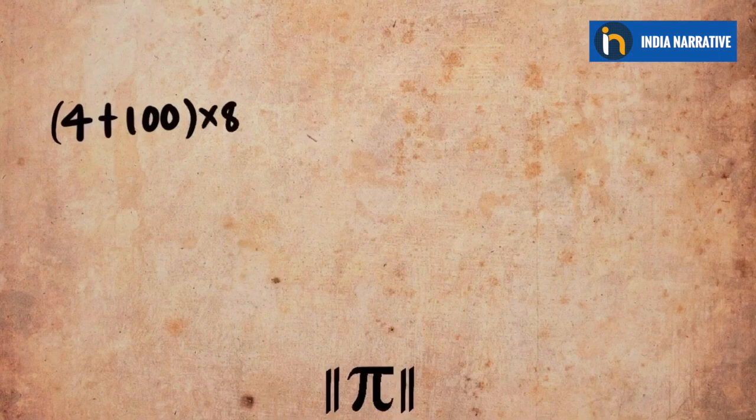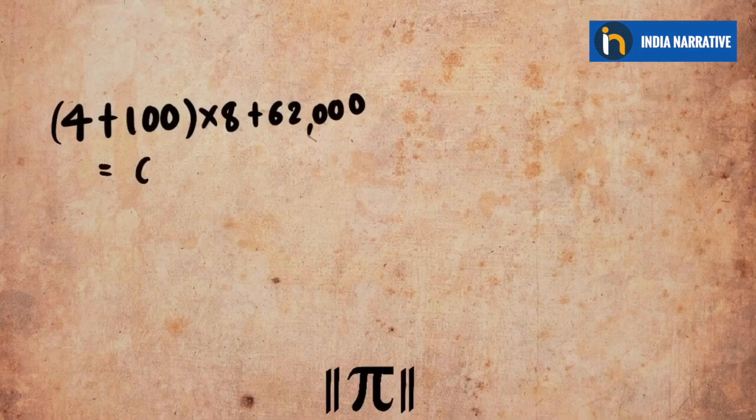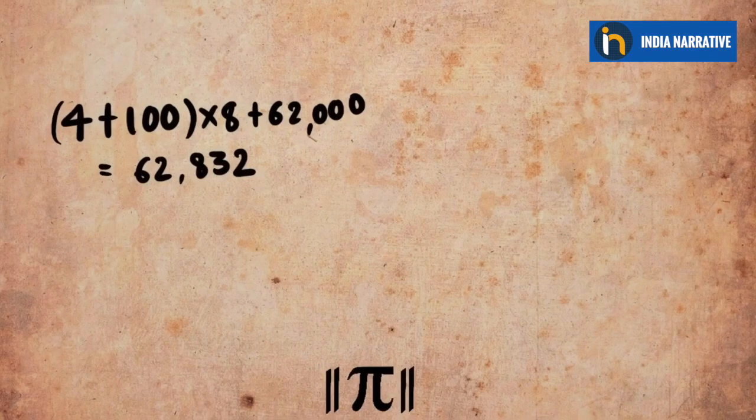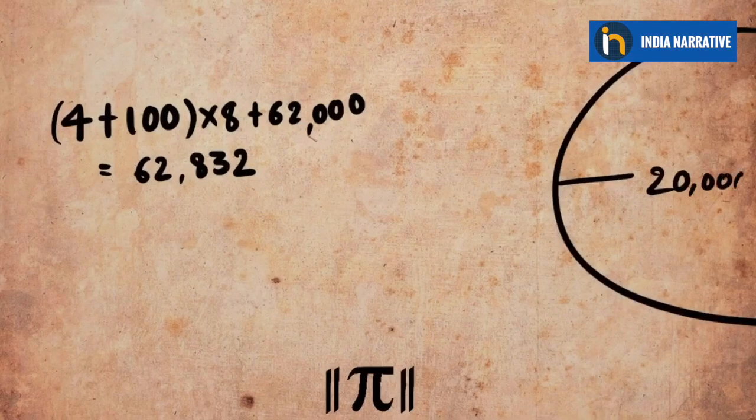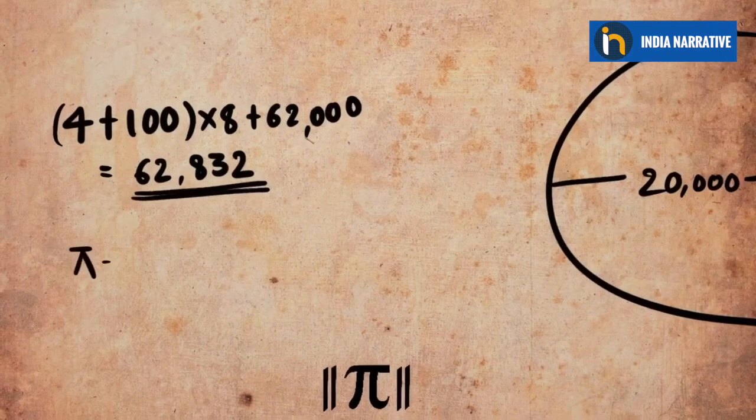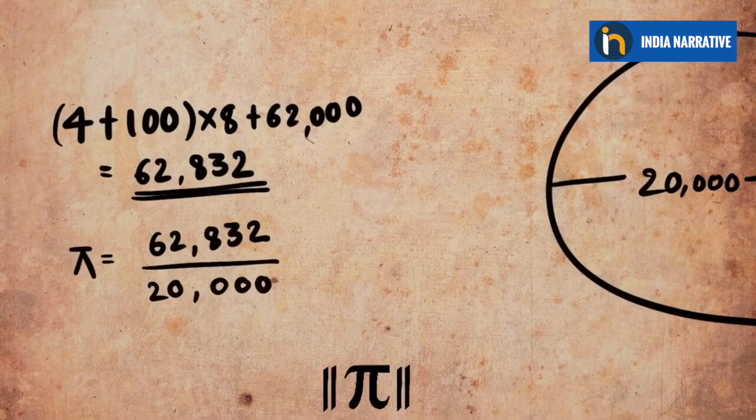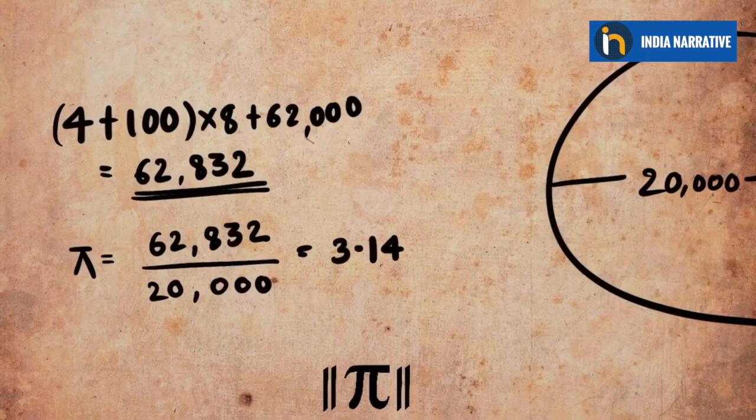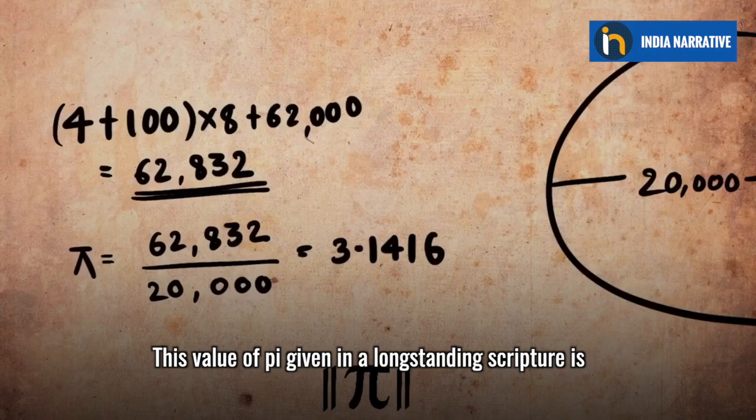Mathematically it means that circumference of a circle with a diameter of twenty thousand is four plus hundred into eight plus sixty-two thousand, which equals to sixty-two thousand eight hundred thirty-two. And we know that the value of pi is the ratio of the circumference to the diameter, so in this case it is sixty-two thousand eight hundred thirty-two divided by twenty thousand, which comes out to be 3.1416.